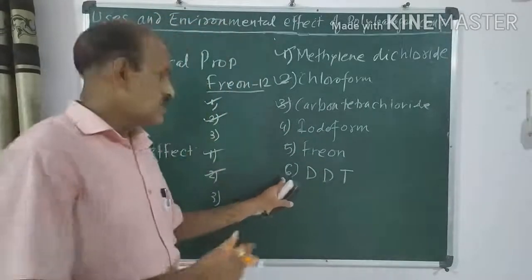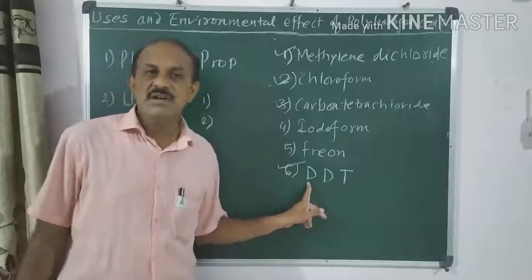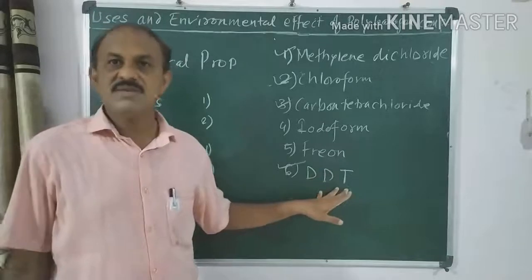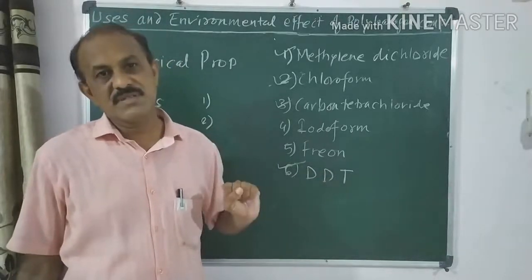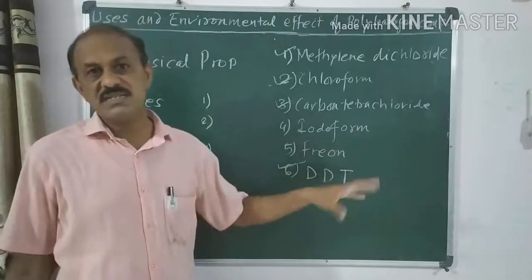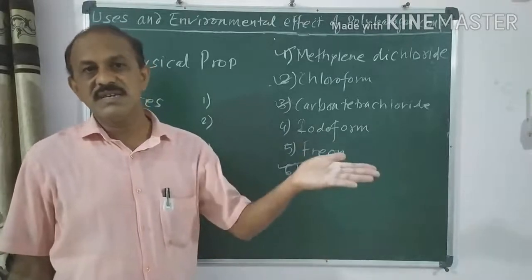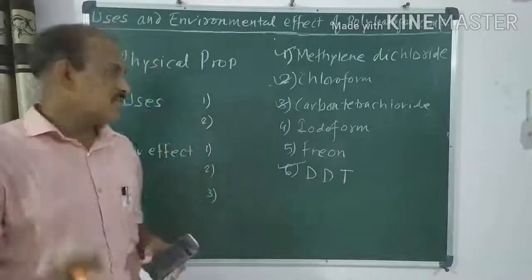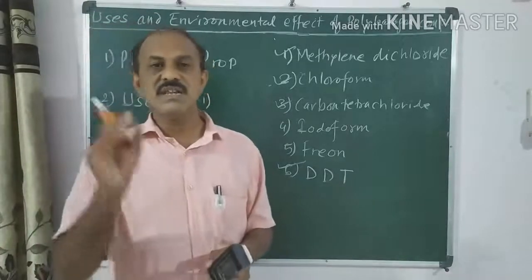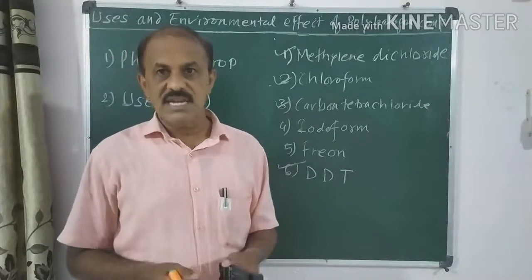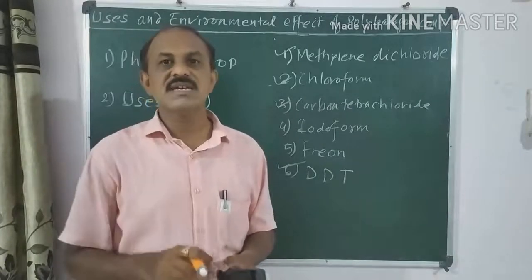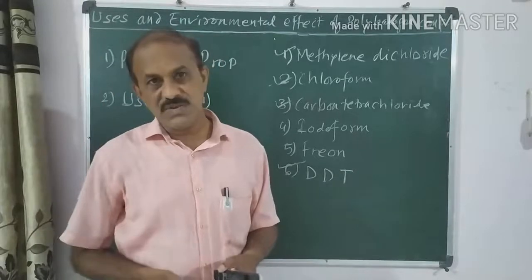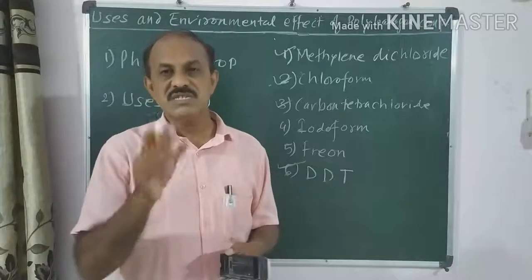The next polyhalogen compound is DDT, which stands for dichloro-diphenyl-trichloroethane. Its physical properties: DDT is a colorless, odorless, tasteless crystalline solid. The general use of DDT: it can kill houseflies and other insects, and it can kill mosquitoes. Because it kills mosquitoes, it controls malaria.